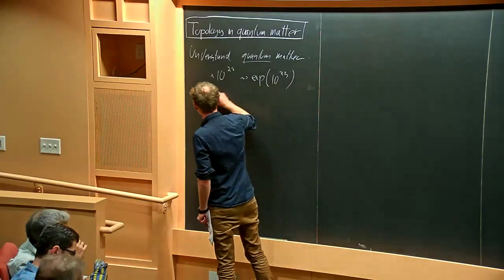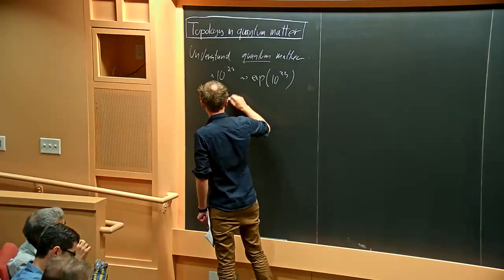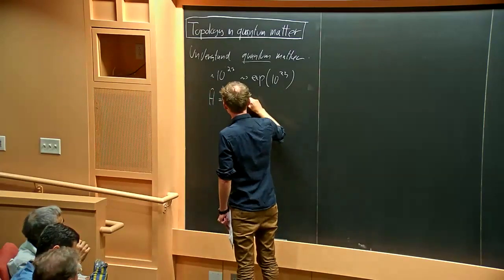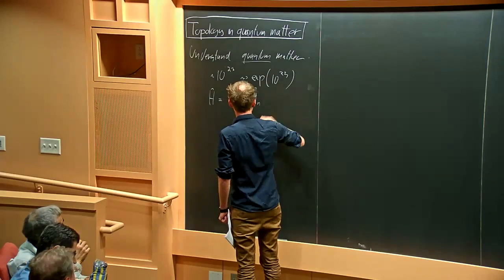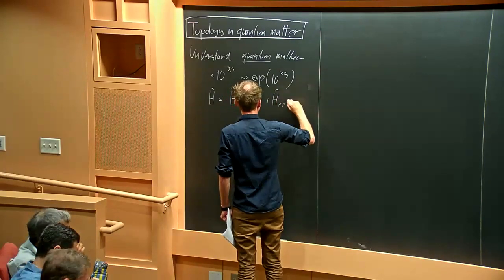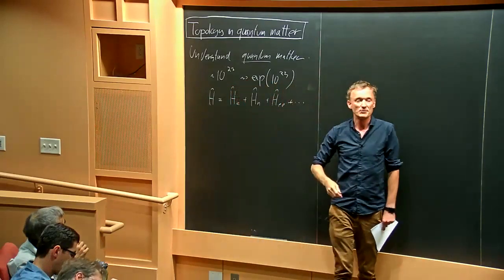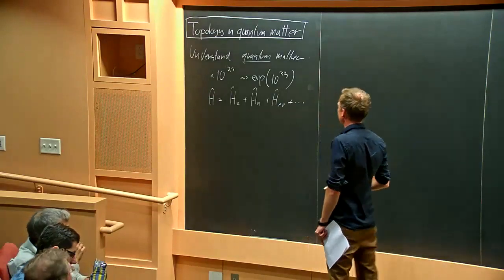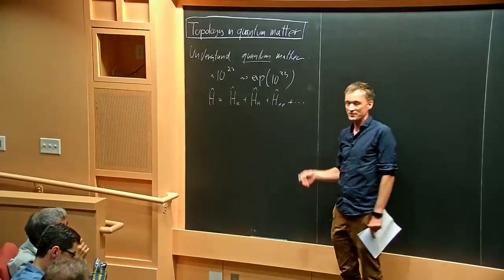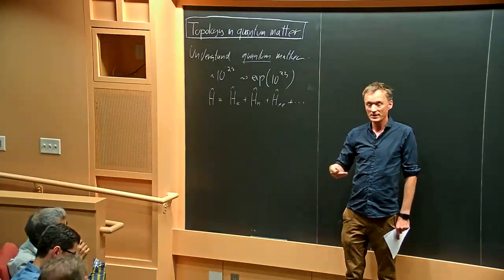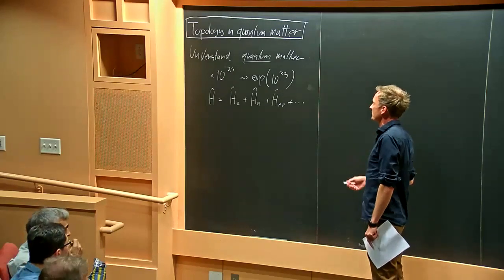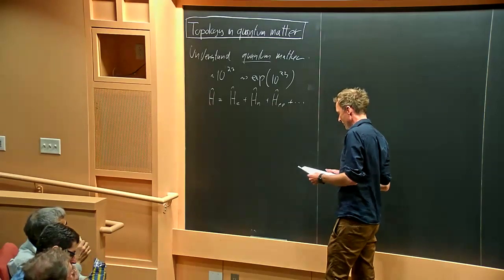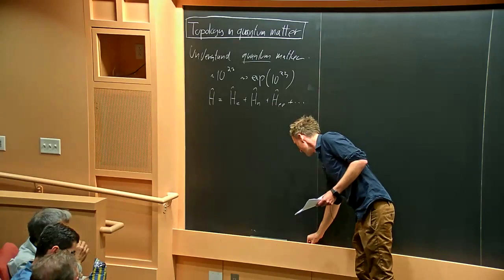Our main goal is to solve a problem in an exponential of 10 to the 23 dimensional Hilbert space, and understand how all these particles interact with each other. We would have a Hamiltonian describing the electrons, neutrons, and all sorts of interactions. This is extremely complicated, so we just have to focus on specific problems, using simple model systems that tell us quite a bit about certain features of condensed matter.